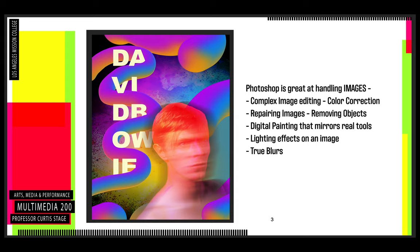Photoshop was first created as an image editing tool, but now it can be used for so much more. Graphic designers use it, photographers use it, animators use it, filmmakers use it, motion graphics artists use it. Complex image editing is what it's really for — color correction, repairing images, removing objects from images, digital painting, using paintbrush tools that mimic real tools. Compositing artists and artists working for film and TV use Photoshop to create images that inspire what a scene looks like.